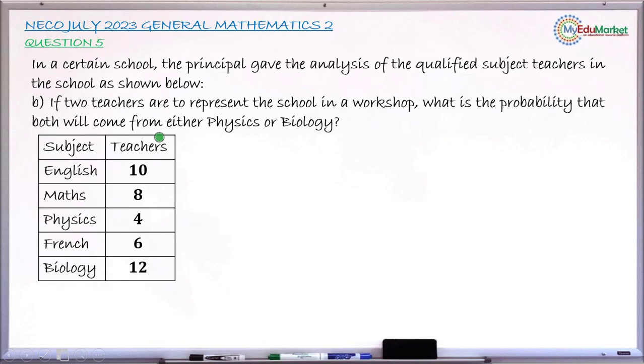This is NECO 2023, Question number 5B. The question says, in a certain school, the principal gave the analysis of the qualified subject teachers in the school as shown in this table below.